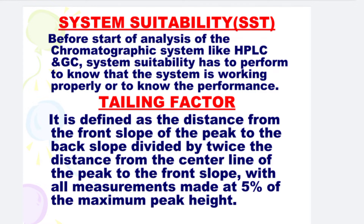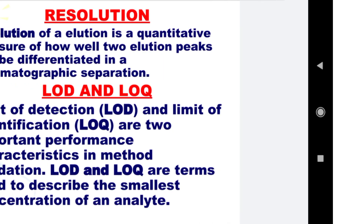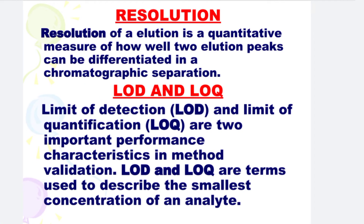Next is Tailing Factor. It is defined as the distance from the front slope of the peak to the back slope, divided by twice the distance from the center line of the peak to the front slope, with all measurements made at 5% of the maximum peak height.